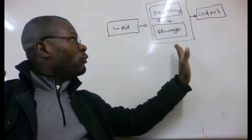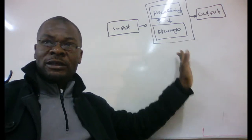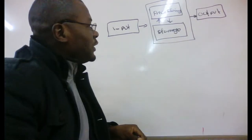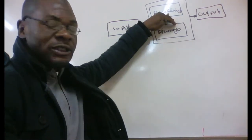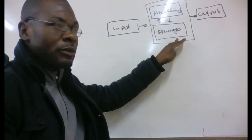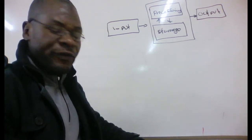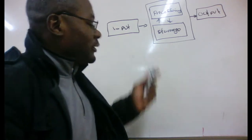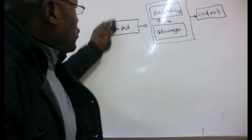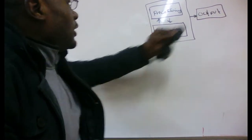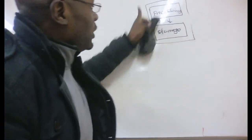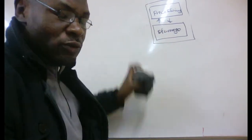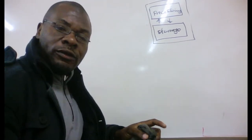Today we want to look at the processing stage. At the processing stage there are two things involved: we've got the processing and we've got the storage. This topic comes from the three computing stages. We covered the input and we finished the output, and today we want to work on the two components in between — the processing and the storage stages of the three computing stages.